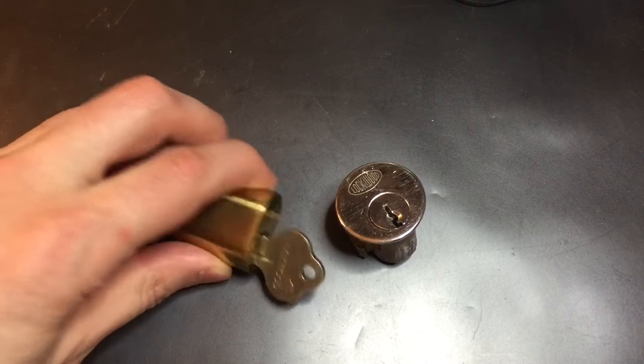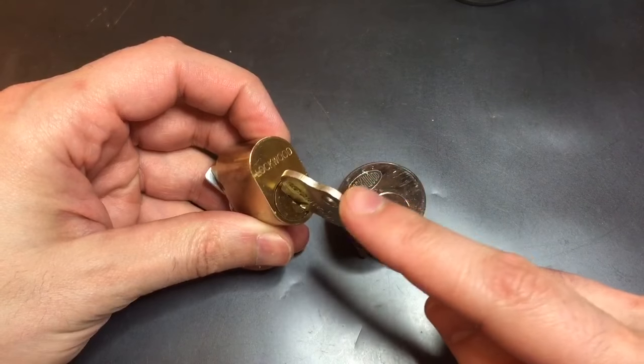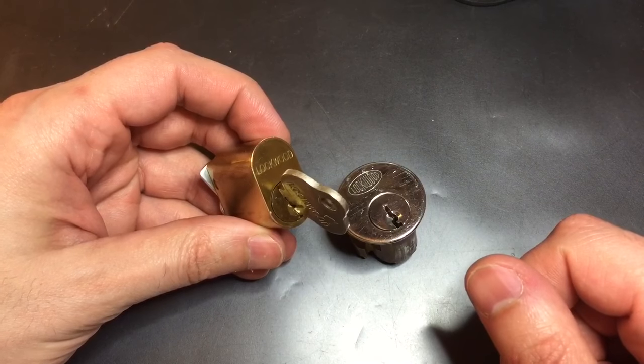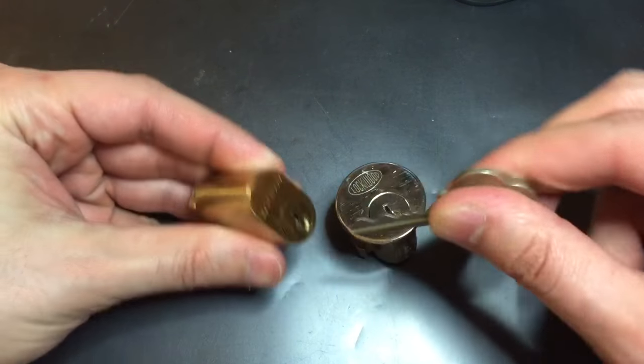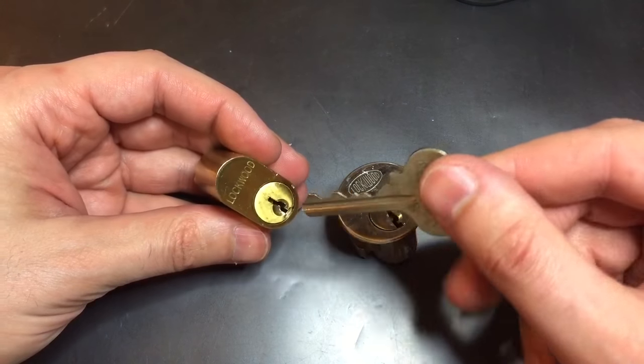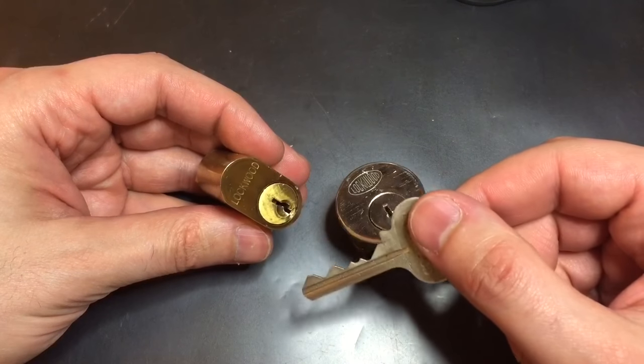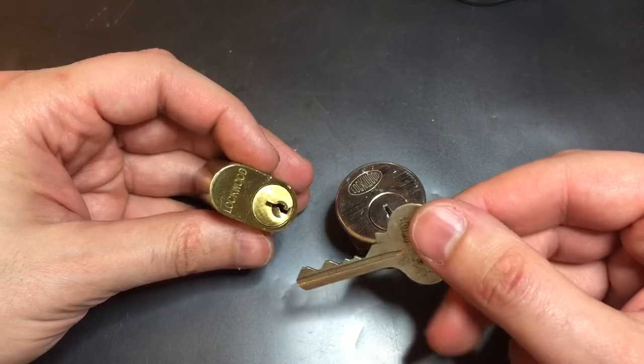This is the Lock Picking Lawyer. I recently posted a video of picking this Lockwood 570 cylinder. It's a six pin lock, has incredible bitting, and contains the beveled driver pins that Lockwoods are known for.